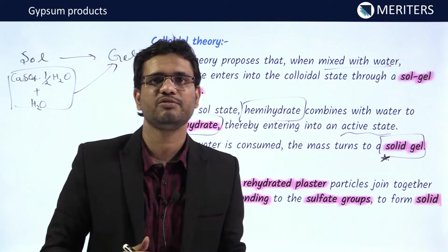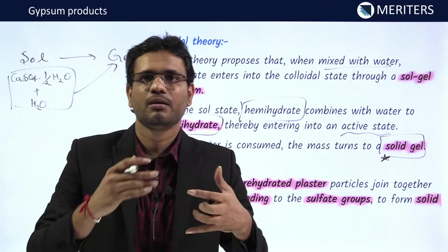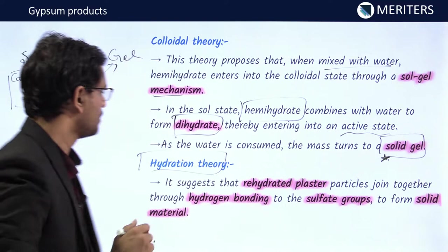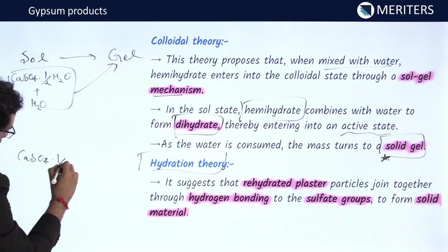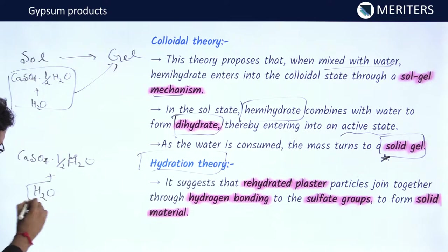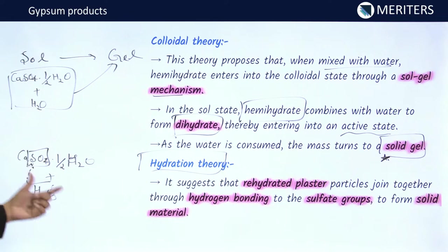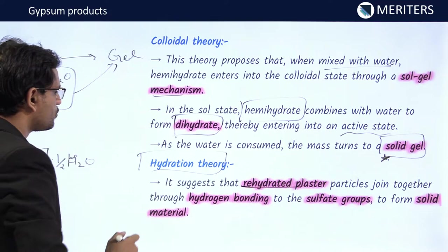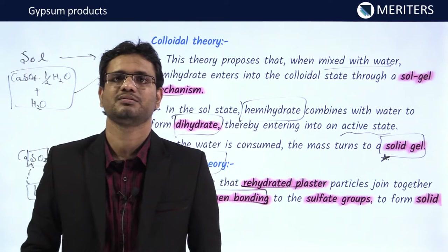The hydration theory states that when extra water is mixed with hemihydrate, the water forms hydrogen bonds with the sulfate groups, giving rise to a solid mass. It suggests that rehydrated plaster particles join together through hydrogen bonding to the sulfate groups to form a solid mass.